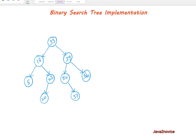What is a binary search tree? A binary search tree is a type of binary tree in which any given node will have at most two children. Data is organized in such a way that for any given node, its left subtree node data will be less than its parent node data, and its right subtree node data will be greater than its parent node data.